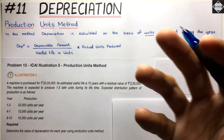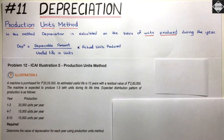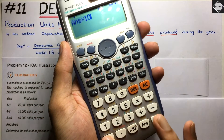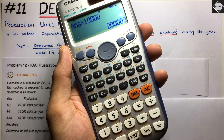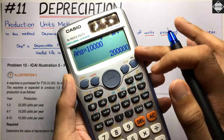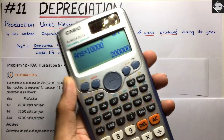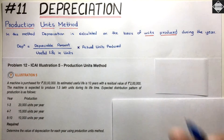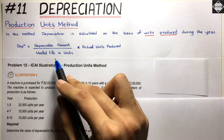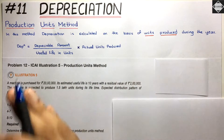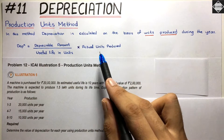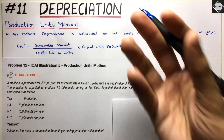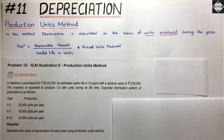Multiply the depreciation per unit (₹20) by the actual units produced in the current year. Say in 2022 they produced 10,000 units — so ₹20 × 10,000 = ₹2 lakhs. That ₹2 lakhs is the depreciation to charge in the current year. That's how you calculate it for any accounting period.